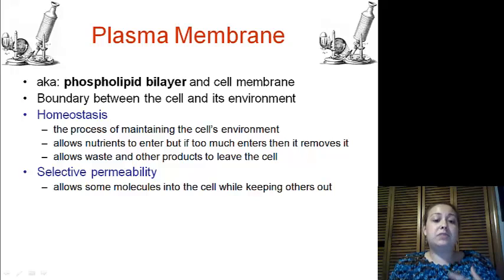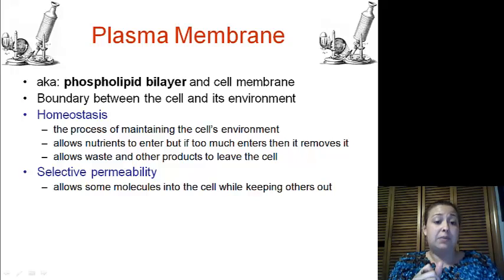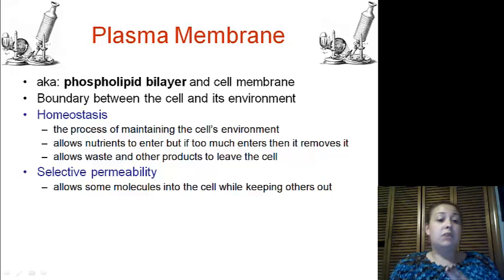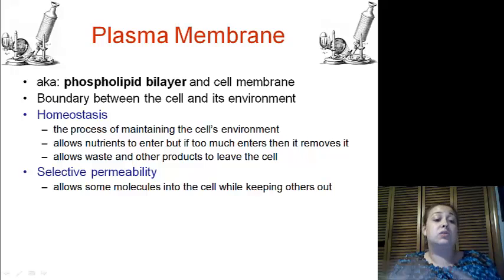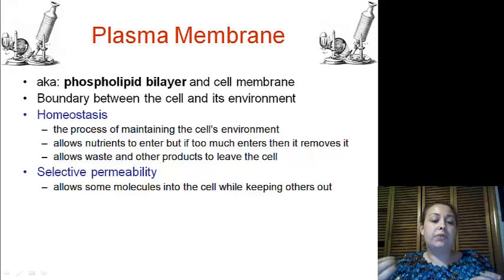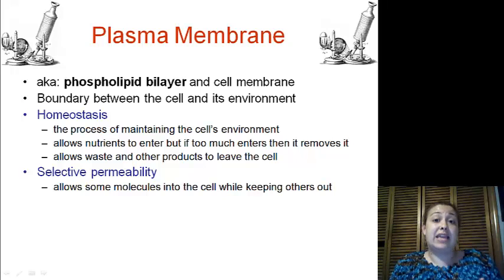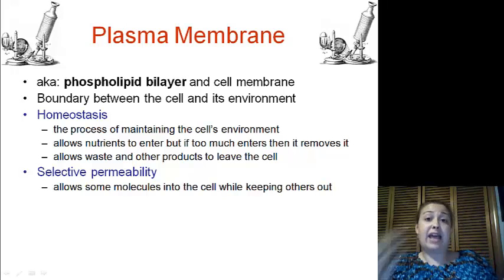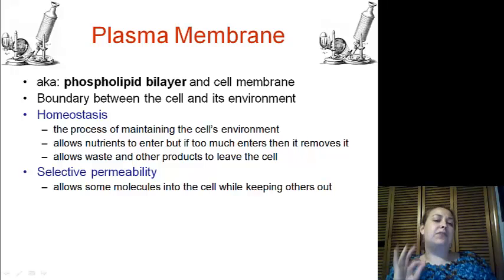Now, to maintain homeostasis, we must be maintaining the cell's environment, allowing nutrients to enter or removing them. We need to allow waste and other products to also leave. Now, this plasma membrane is selectively permeable, which means it only allows certain things in or certain things out. It's selective of what it will allow to pass.